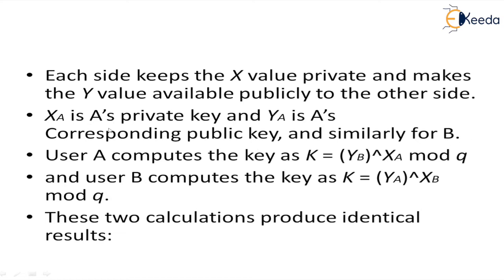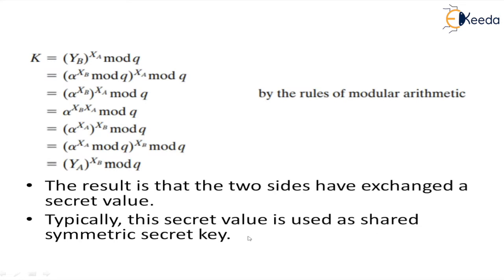Each user generates two keys: one kept private and one made public. User A computes the key as k = y_B raised to x_A mod q, and user B computes the key as k = y_A raised to x_B mod q. These two calculations produce identical results. This is achieved by the rules of modular arithmetic. The result is that the two sides have exchanged a secret value, which is typically used as a shared symmetric secret key.